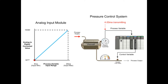The analog input module converts the 4 to 20 mA signal to a digital value ranging from 3,277 to 16,384. A 4 mA signal results in a value of 3,277 and a 20 mA signal results in a value of 16,384.